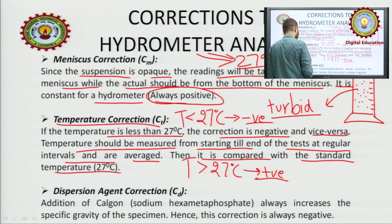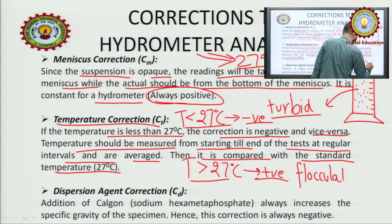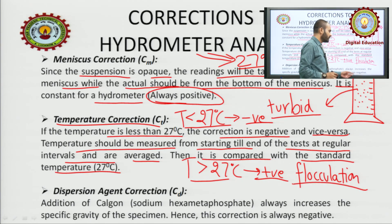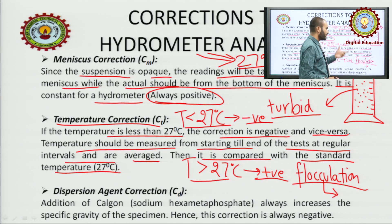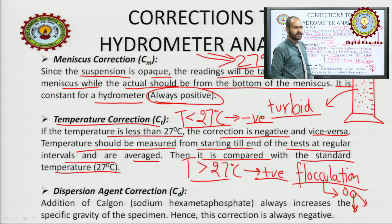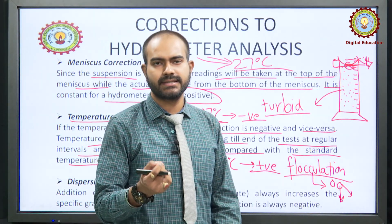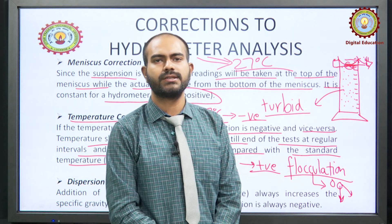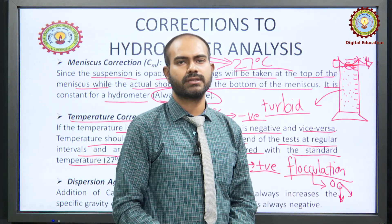Temperature correction: these experiments are carried out at the standard temperature of 27 degrees centigrade. If the temperature is less than 27°C, a negative correction is applied; if greater than 27°C, a positive correction is applied. Temperature should be measured from start to end of the test at regular intervals and averaged, then compared with the standard temperature of 27°C.